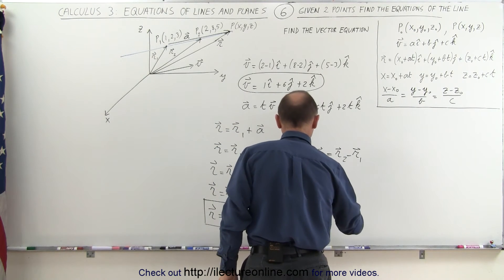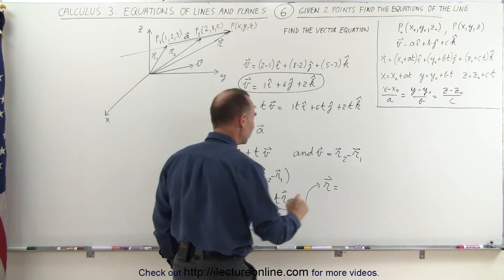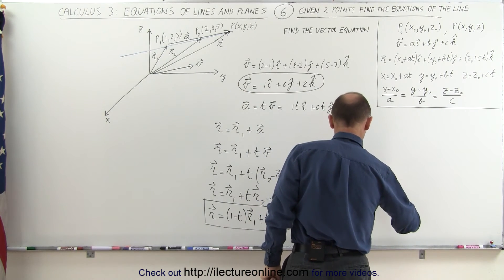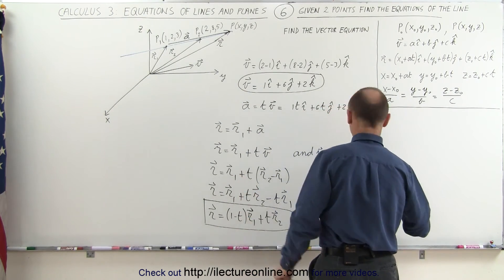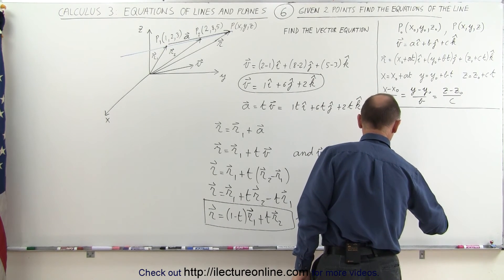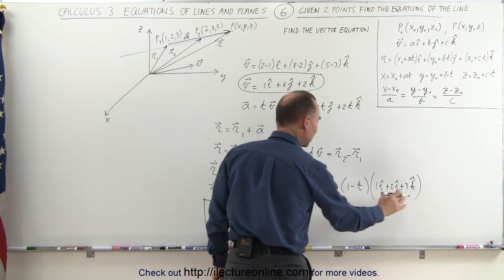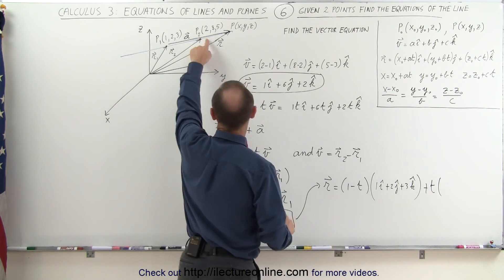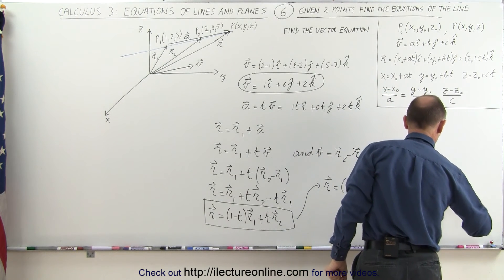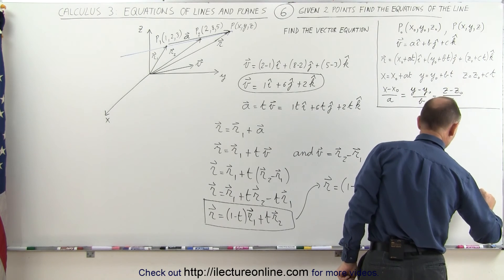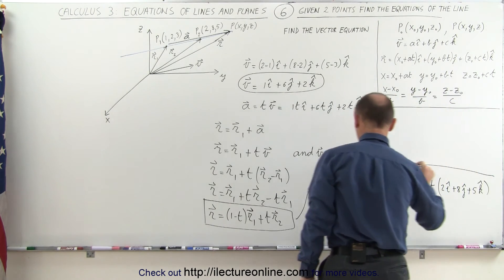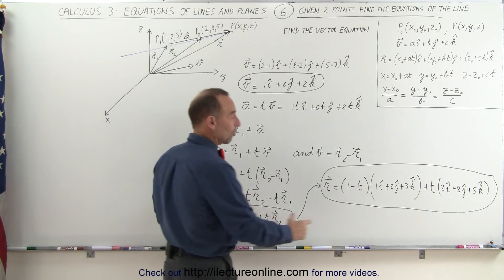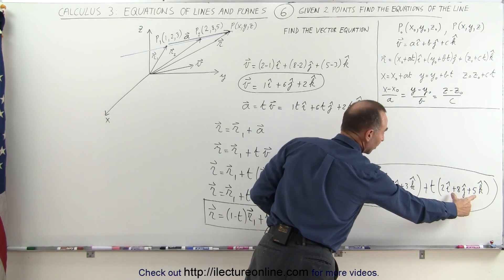In this example, the R vector equals (1 minus t) times the R1 vector, which is 1i plus 2j plus 3k, plus t times the R2 vector, which is 2i plus 8j plus 5k. This becomes the vectorial equation of this particular line, where the first term gives the direction to point 1 and the second term gives the vector to point 2.